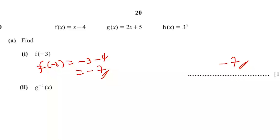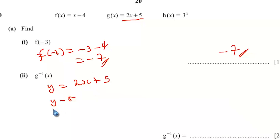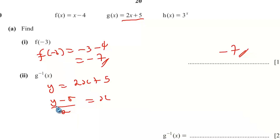Part ii: find g inverse of x. Let y equal g(x) equals 2x plus 5. Make x the subject: y minus 5 over 2 equals x. Replace x with g inverse of x and y with x, giving g inverse of x equals (x minus 5) over 2.